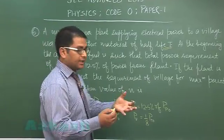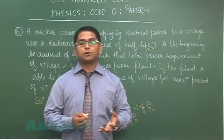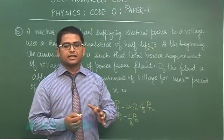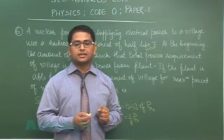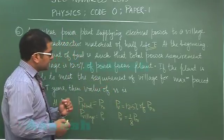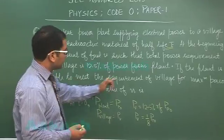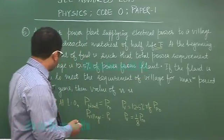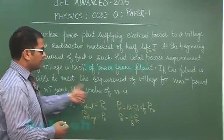Now slowly and steadily the power output from the plant would decrease because the radioactive materials would start disintegrating or decaying. And the question says if the plant is able to meet the requirement of village for maximum period of N T years, the value of N.